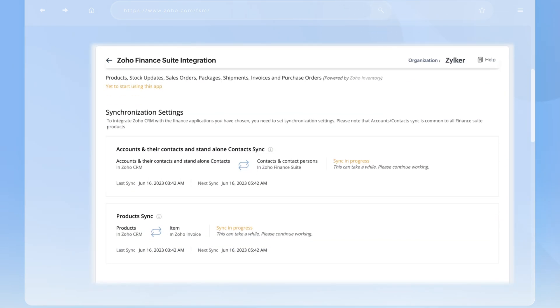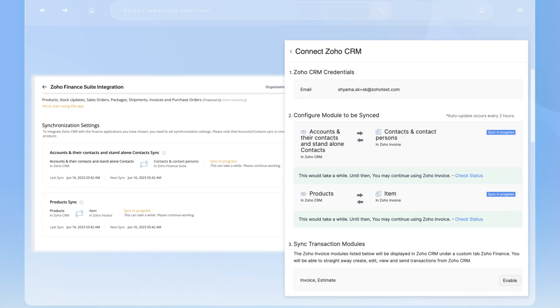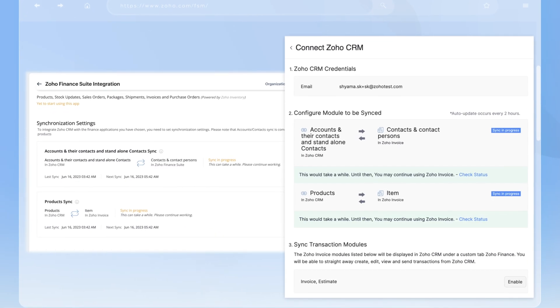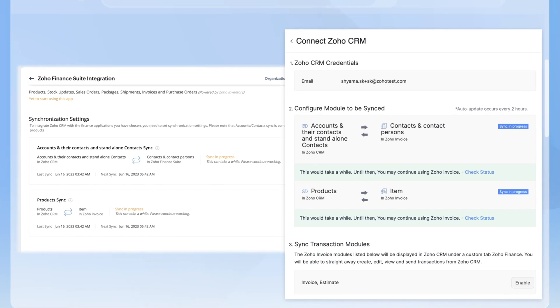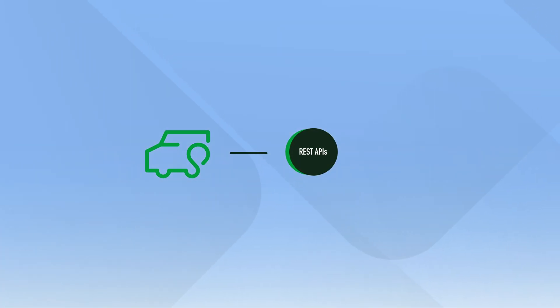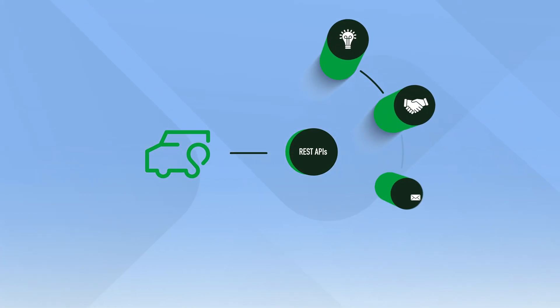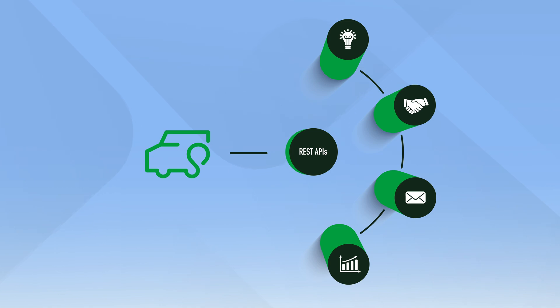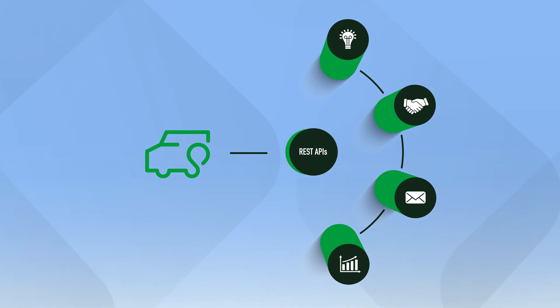The extension also enables the two-way syncing of data between Zoho FSM and Zoho CRM. Besides this, you can use REST APIs to integrate with a host of third-party apps, SMS providers, accounting software, and more.